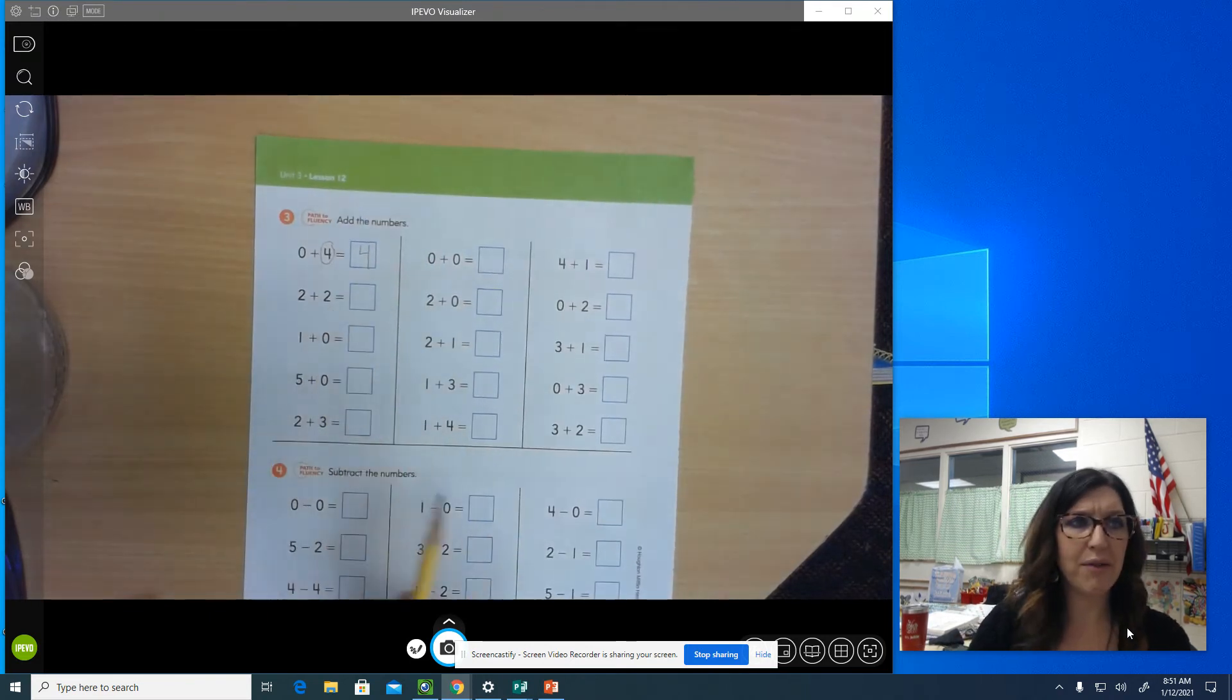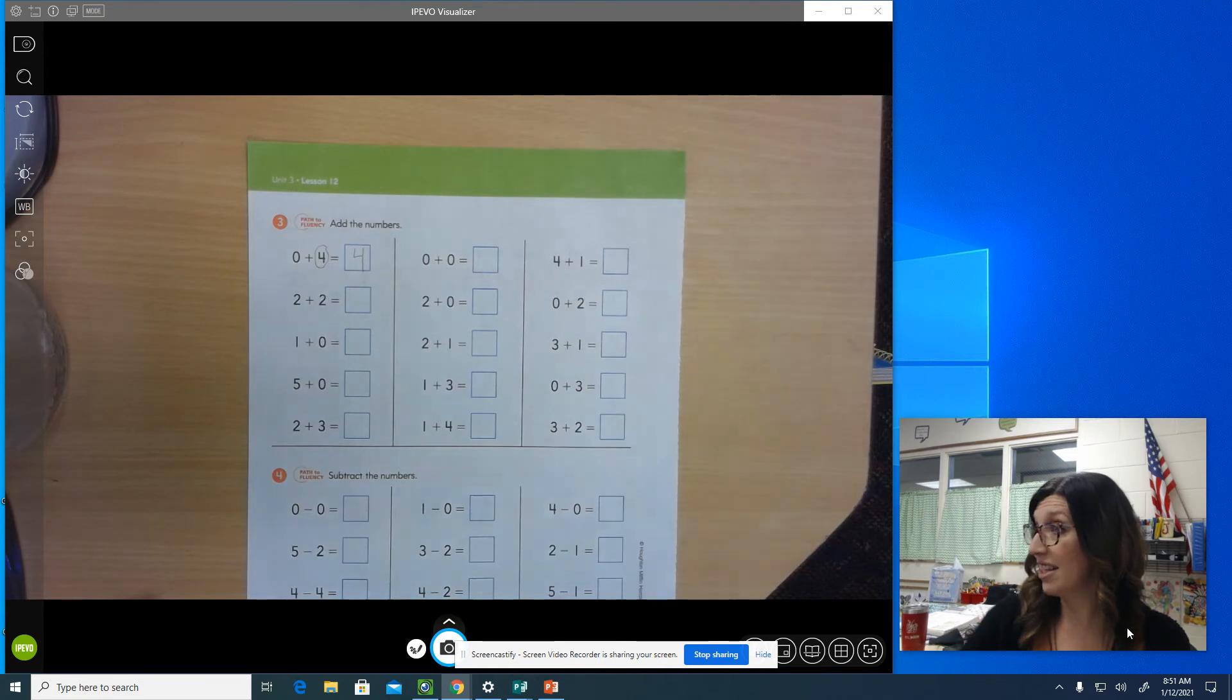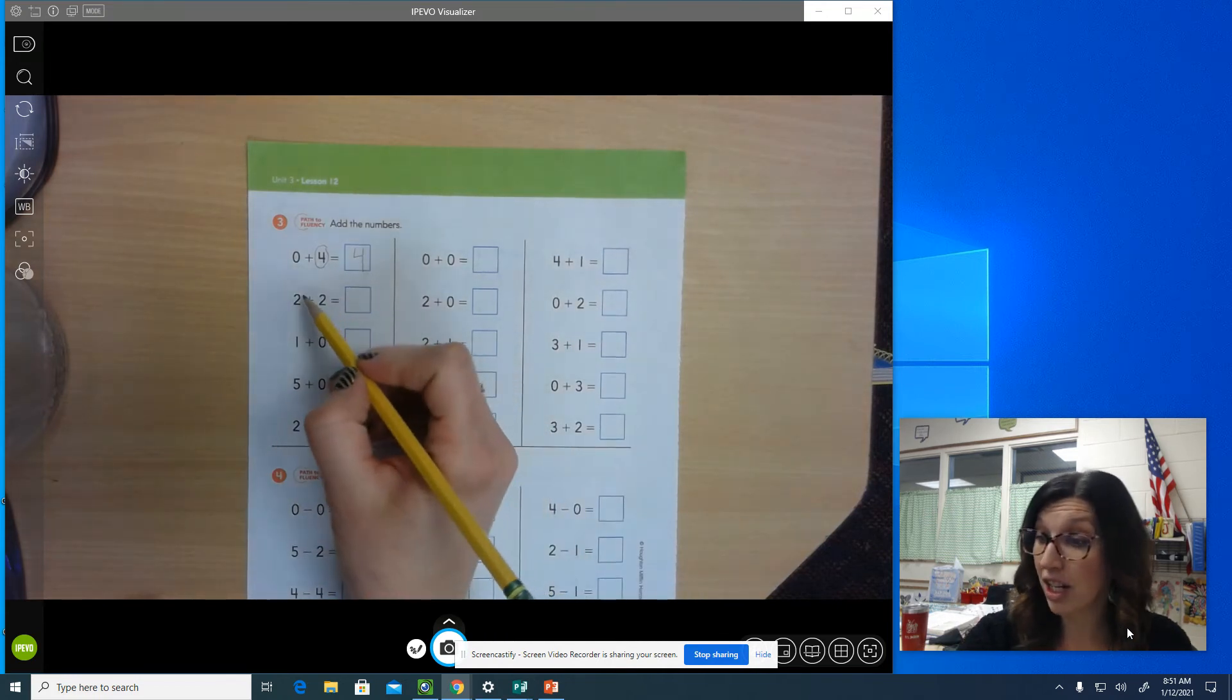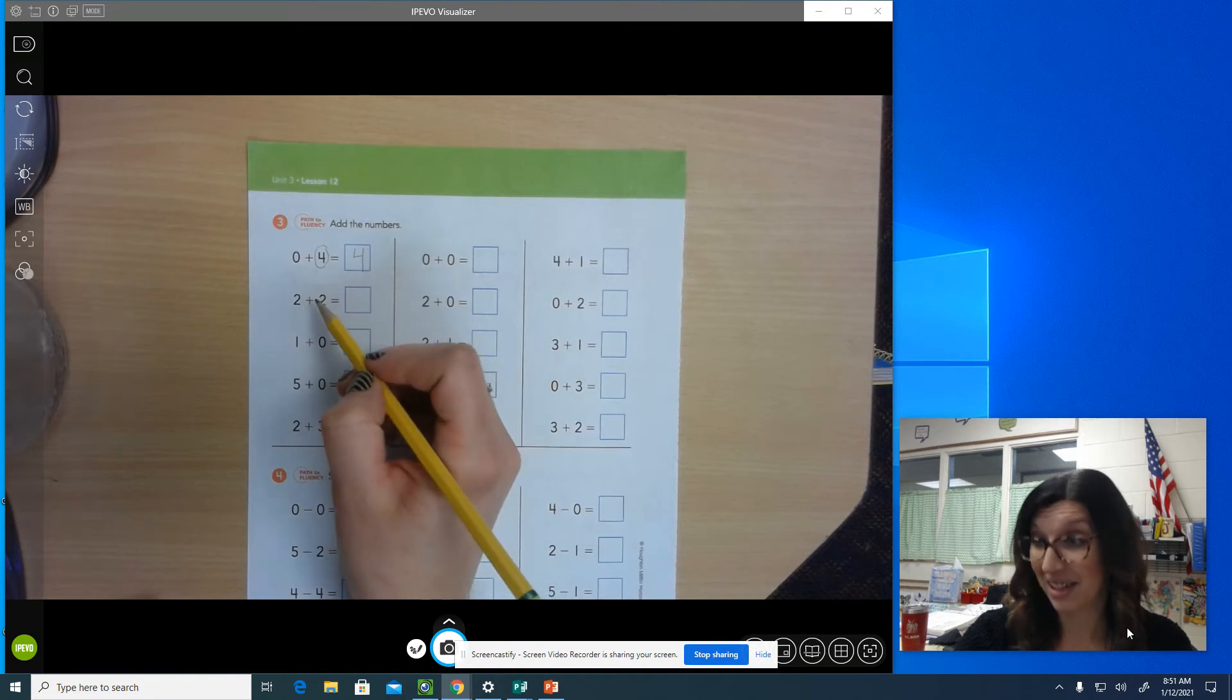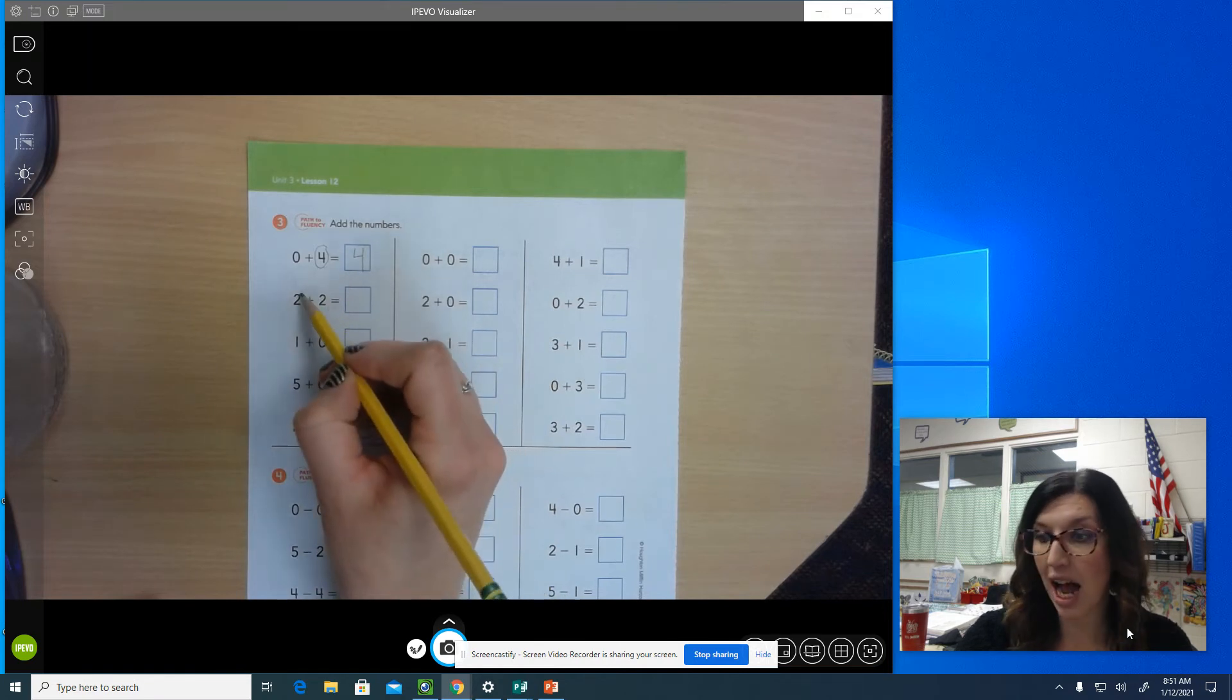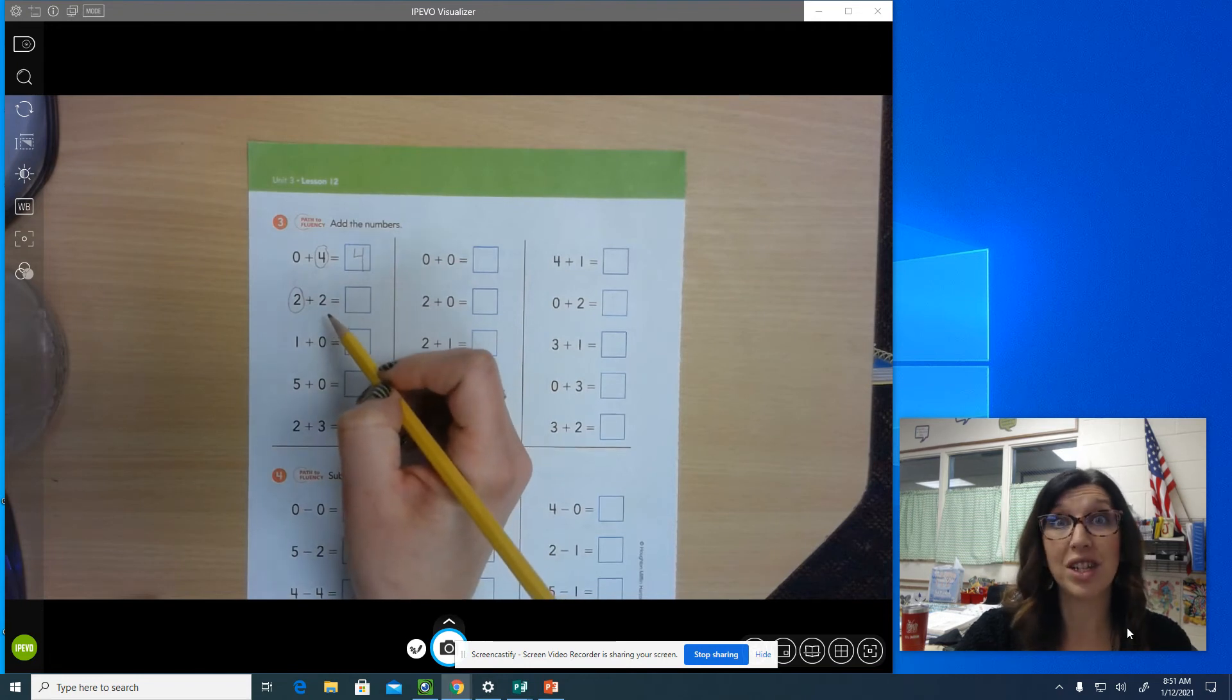Well what do you think we should do if we have two numbers that are the same? Yes. Circle both. I could circle both but that would be kind of confusing. I think that's a great idea. I'm going to circle the first number and then I'm going to draw dots for the second number.